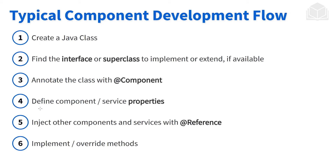Afterwards, we can inject other components and services as we're fleshing out the rest of the class — we can grab other services using the @Reference annotation. And then finally, we implement or override the methods that need to be implemented or overwritten, depending on whether we're extending or implementing an interface or a base class. So one more time: create a Java class, implement or extend, create a component, define properties, bring in other services using @Reference, and then implement or override methods depending on what we're trying to do.